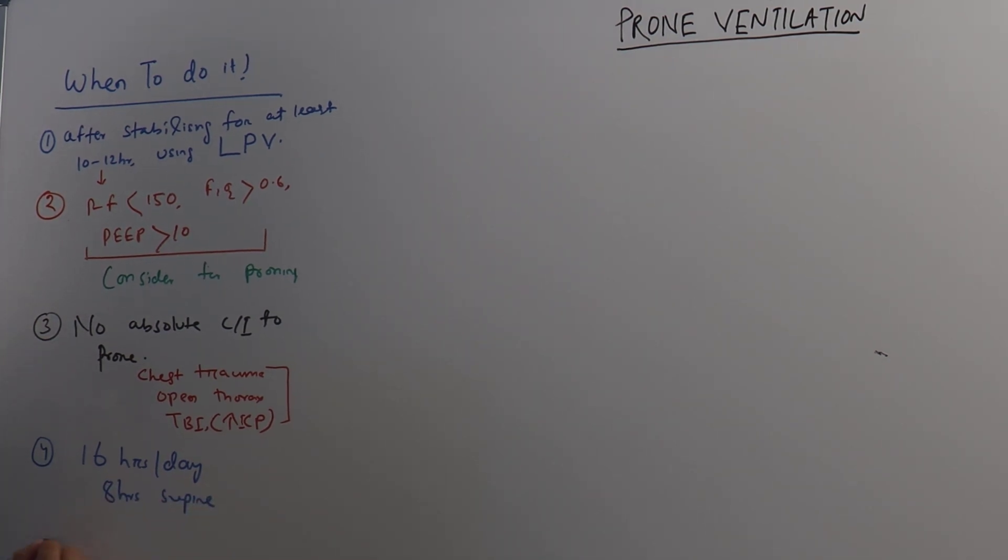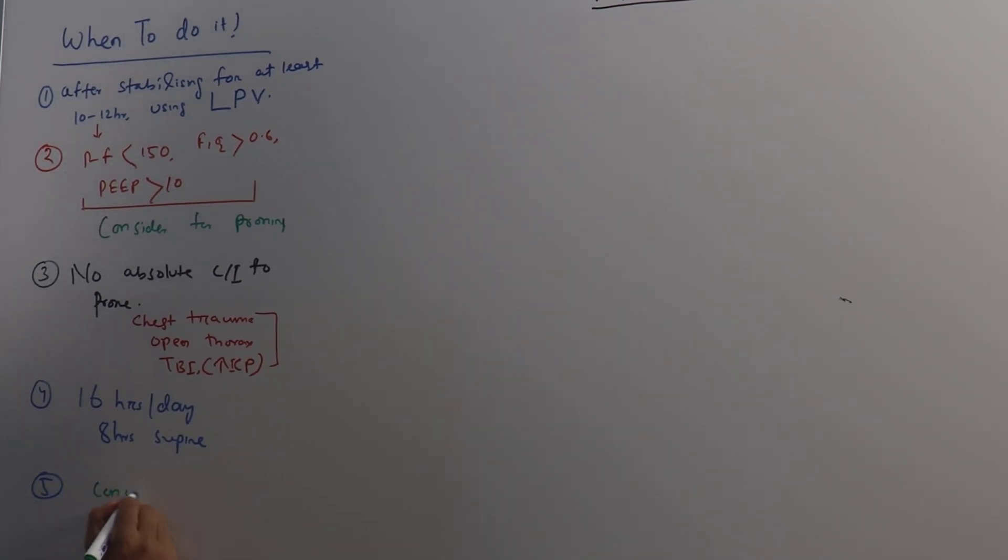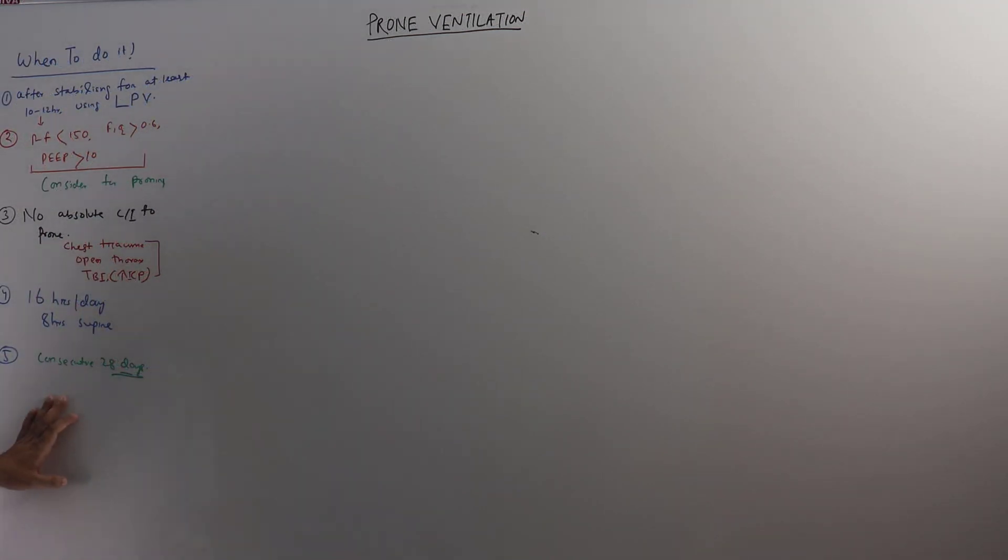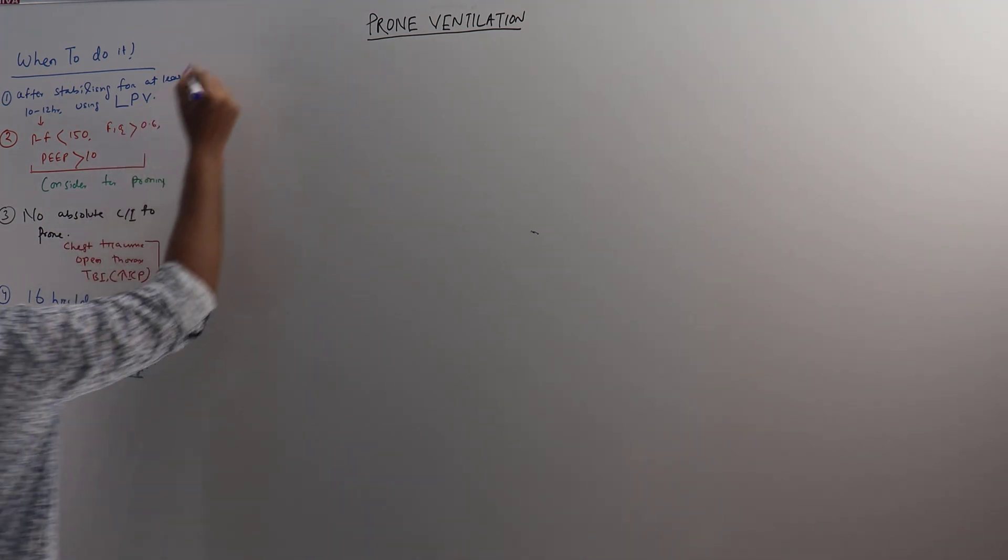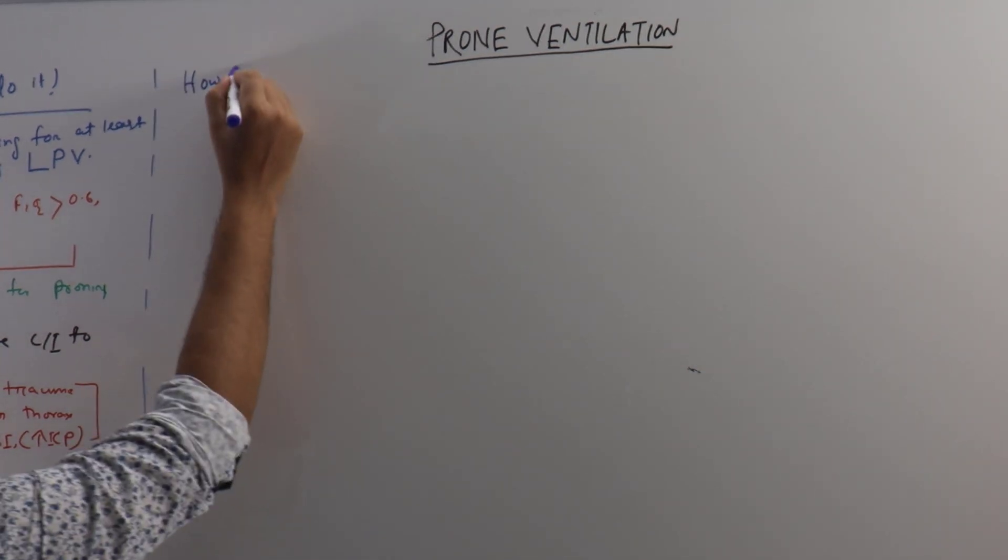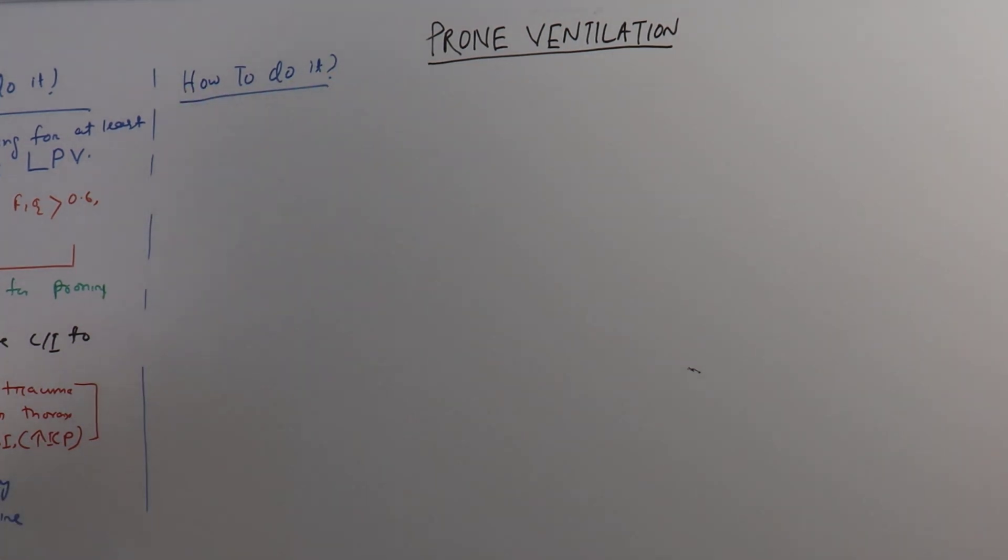When you do proning, proning has to be done 16 hours a day with 8 hours supine, and it can be done for consecutive 28 days. This is what the PROSEVA group of people have done. When to do it, these are the indications, contraindications, how long in a day, and for how many days it can be done.